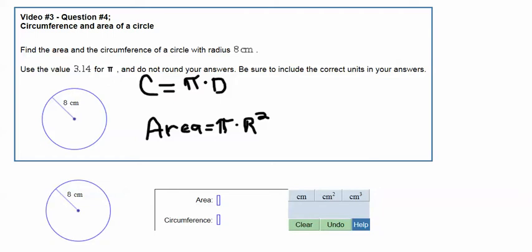This video is on circumference and area of a circle. The question reads, find the area and the circumference of a circle with a radius of 8 centimeters.